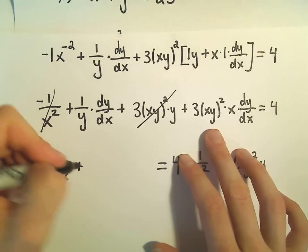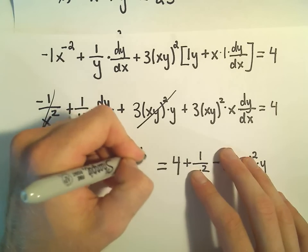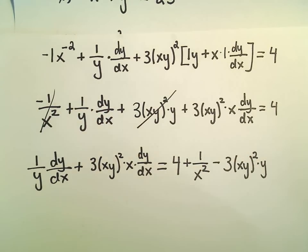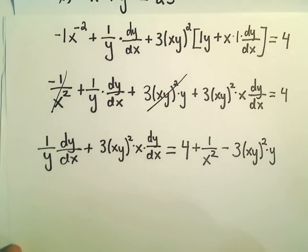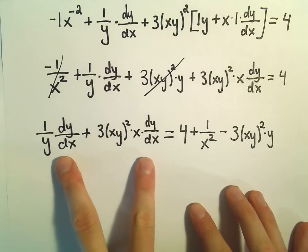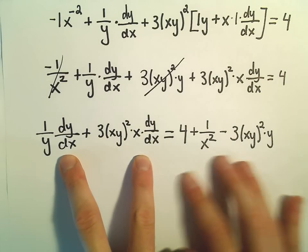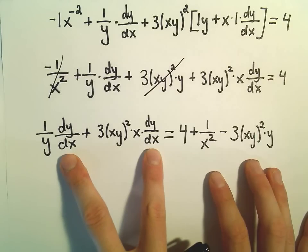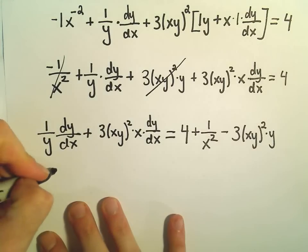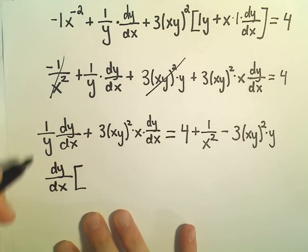Now what I'm going to be left with on the left is just 1 over y times dy dx, and then we have plus our 3 xy squared times x times dy over dx. This is kind of the last step, and this is the point: everything on the left side now has a dy dx attached to it, the stuff on the right doesn't. Since everything on the left has a dy dx attached to it, in order to solve for dy dx we can just factor that out. So we would have dy over dx if I factor it out.